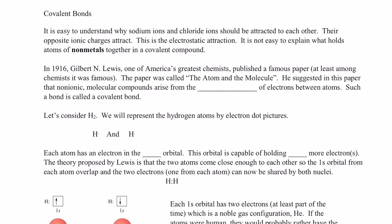So ionic bonds, if you recall, are the result of metals losing electrons to form positive ions and non-metals gaining electrons to form negative ions, and the positive and negative ions are attracted to each other by an electrostatic attraction, and we call that the ionic bond. Covalent bonding is different.